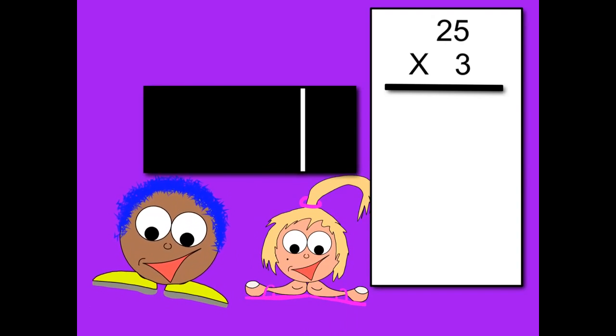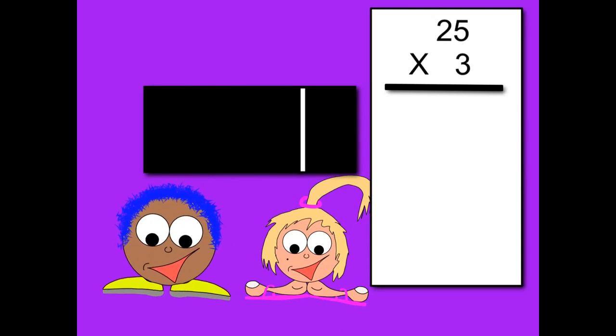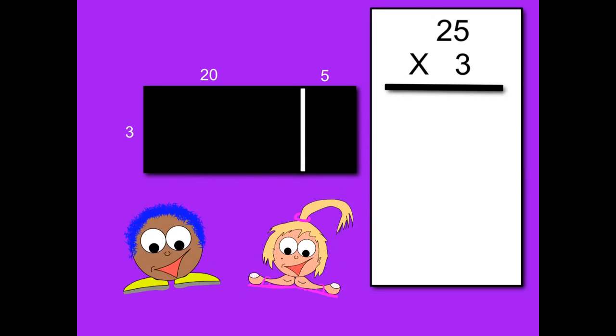Yeah, and we can use a diagram to make it clear. Have a look at this rectangle and see how I've separated it. Okay, so we've broken the 25 into 2 tens, which is 20, and 5 units, which is 5. And we have 3 groups of each one.